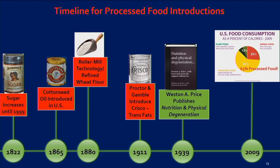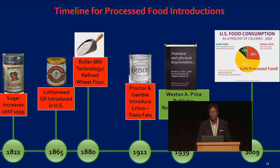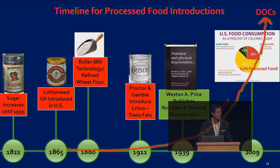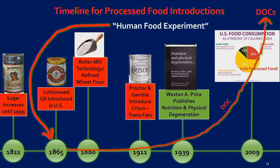Weston Price recognized all this, and in his epic research and treatise, 'Nutrition and Physical Degeneration,' he connected these four foods to what became Diseases of Civilization. Nobody listened — or we wouldn't be in this mess. By 2009, our own USDA shows 63% of the American diet is made up of these four processed foods, and Diseases of Civilization are through the roof. But the human food experiment didn't begin in 1980 when we were told to go low-fat, and it didn't begin in the 1950s when saturated fat was vilified. It began right after the American Civil War, when the first vegetable oil was introduced.